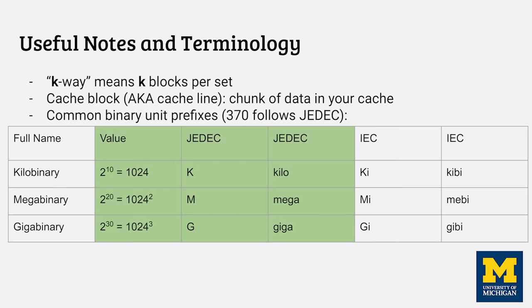Here are some useful things to keep in mind when studying caches and approaching these problems. When you're told you're dealing with something like a two-way set, that means that cache is associative and has two blocks for every set. Blocks and lines are synonyms and just refer to contiguous segments of data. This table of binary prefixes is helpful because when dealing with larger memory units we often refer to things in kilo, mega, and gigabytes. These are good things to consider having on a cheat sheet just to quickly reference.